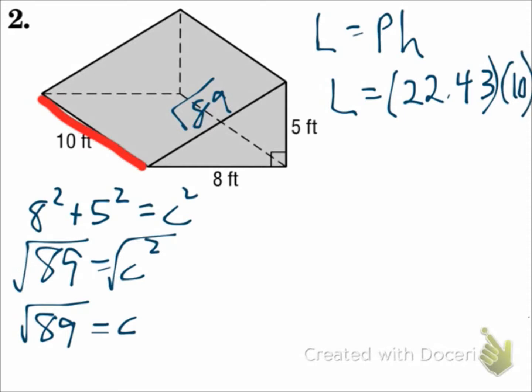And now I can multiply that together. And the lateral area is 224.3, and that'll be feet squared. Remember, P is the perimeter of the base. I had to do the Pythagorean theorem to find the missing side. And H is the distance between the bases.